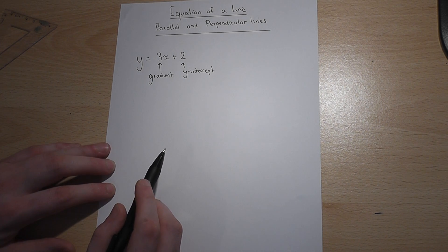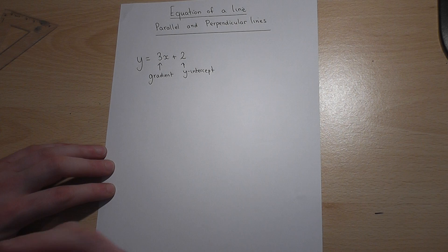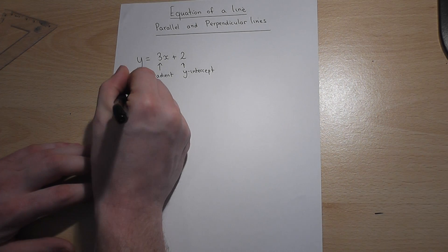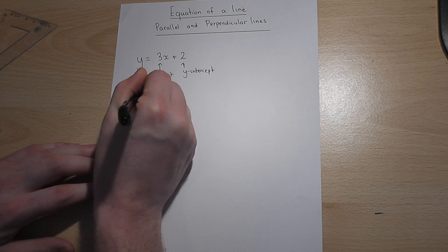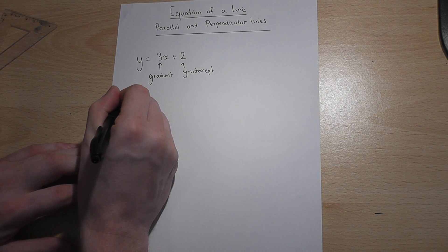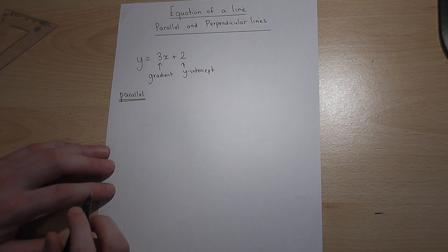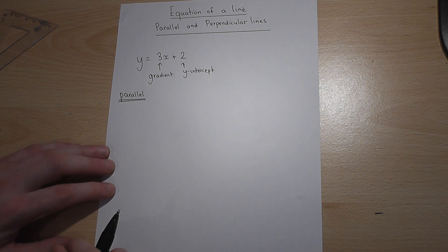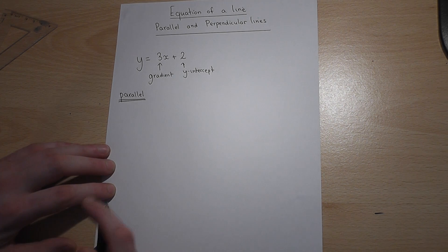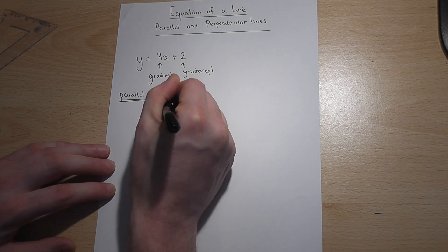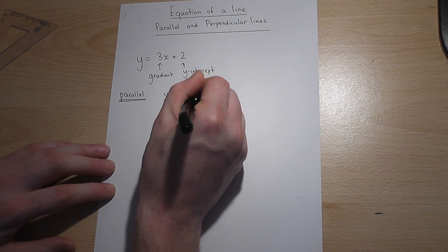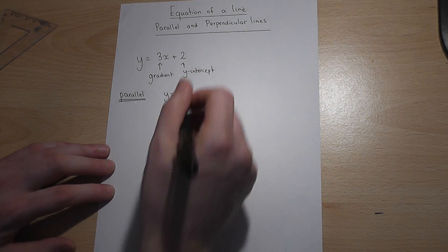Now if you are asked to write down an equation of a line parallel to y equals 3x plus 2, then all we need is another line with the same gradient. So any line of the form 3x plus anything else is always parallel.